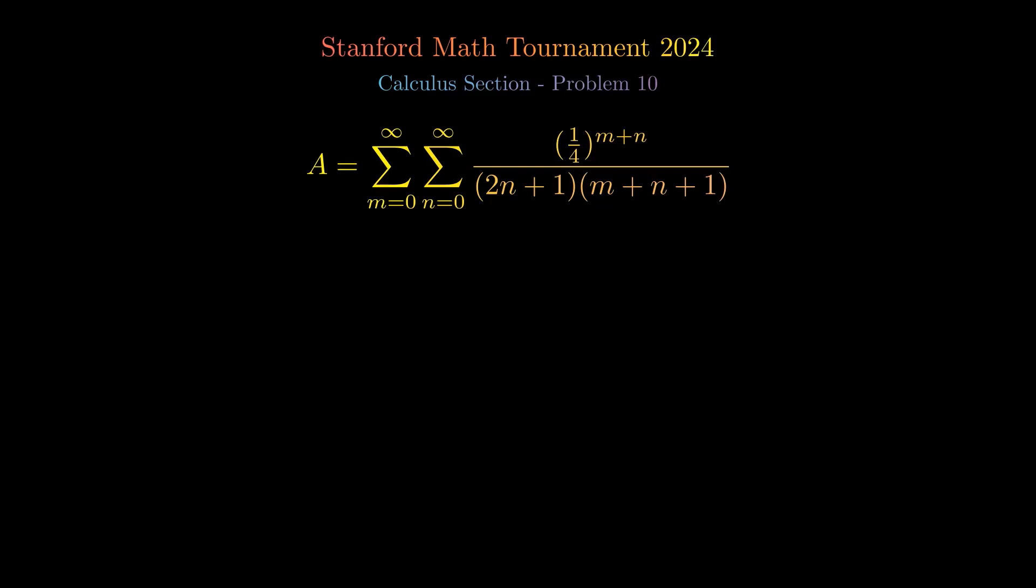Step 1: Rewriting the Summation. By factoring and restructuring, we express A as the summation of 8 times 1 half raised to the power of 2m plus 2n plus 2,